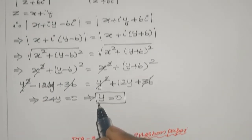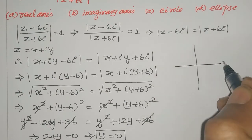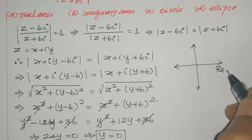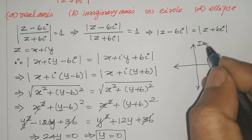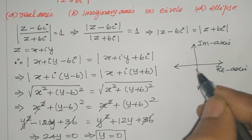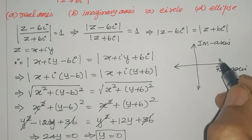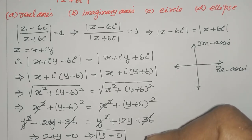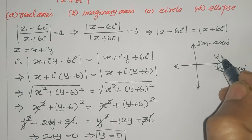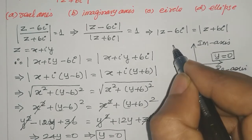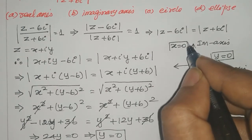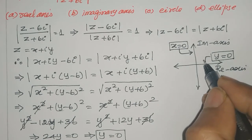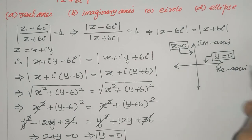y equal to 0 — what does this mean? In the complex number system, the real axis carries x values and the imaginary axis carries y values. So when y equal to 0, this means we are on the real axis, i.e., the equation's graph lies on the x-axis.